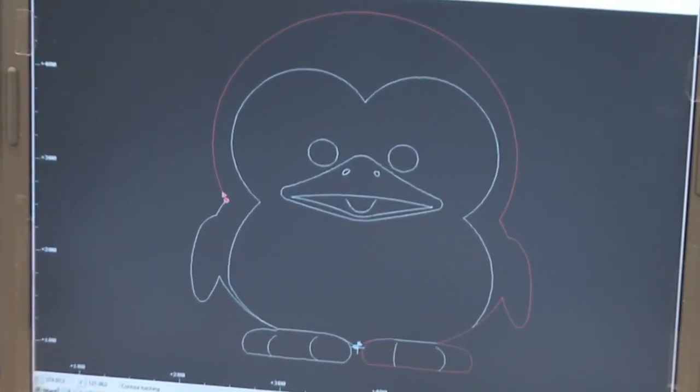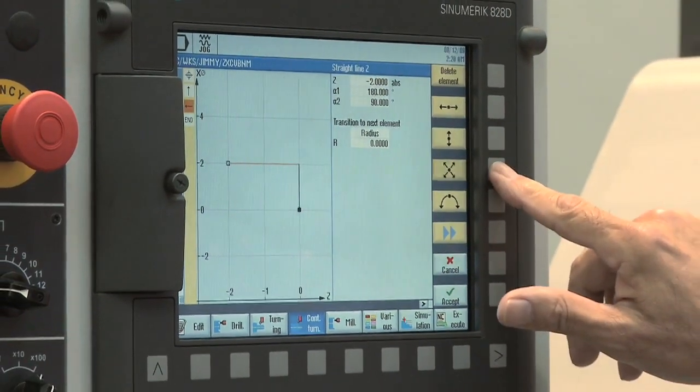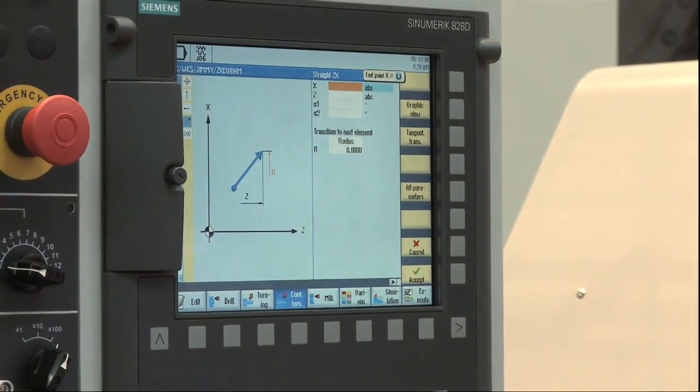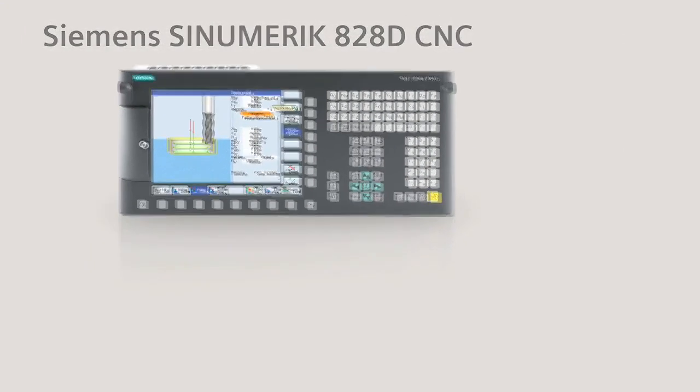So give your job shop a new business advantage. Achieve faster and easier part production using contour calculator and CAD reader. Seeing is believing with the SINUMERIK 828D CNC.